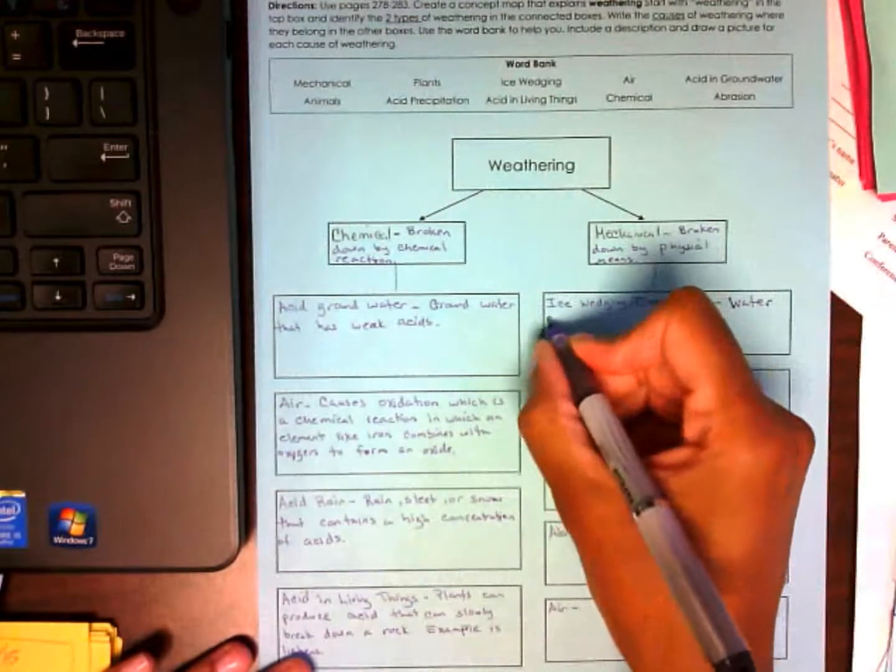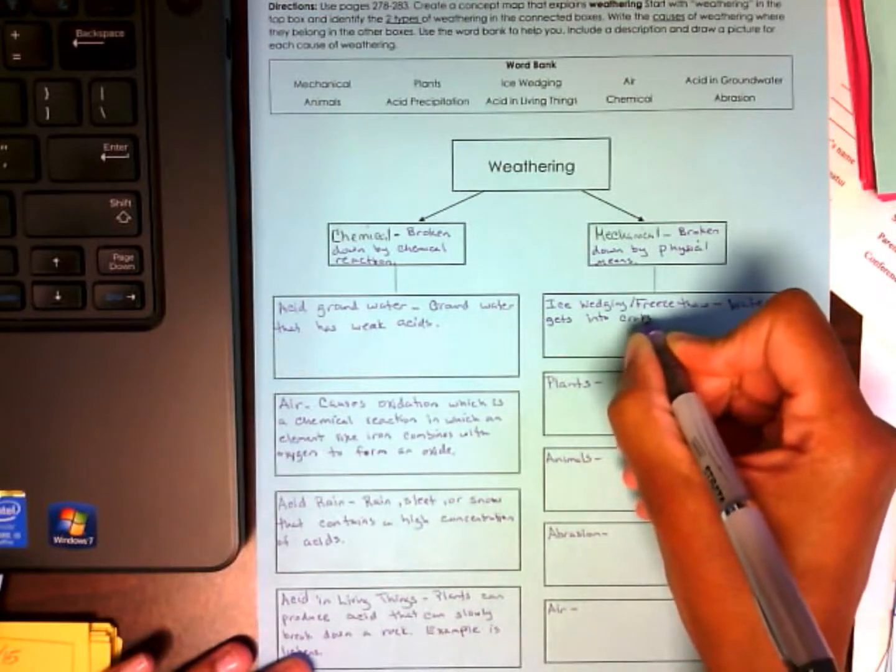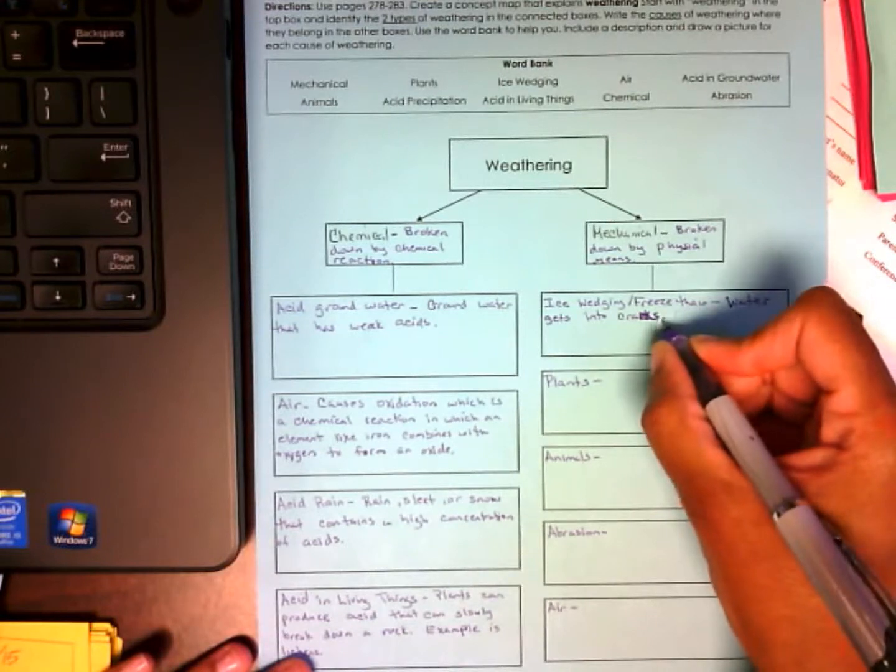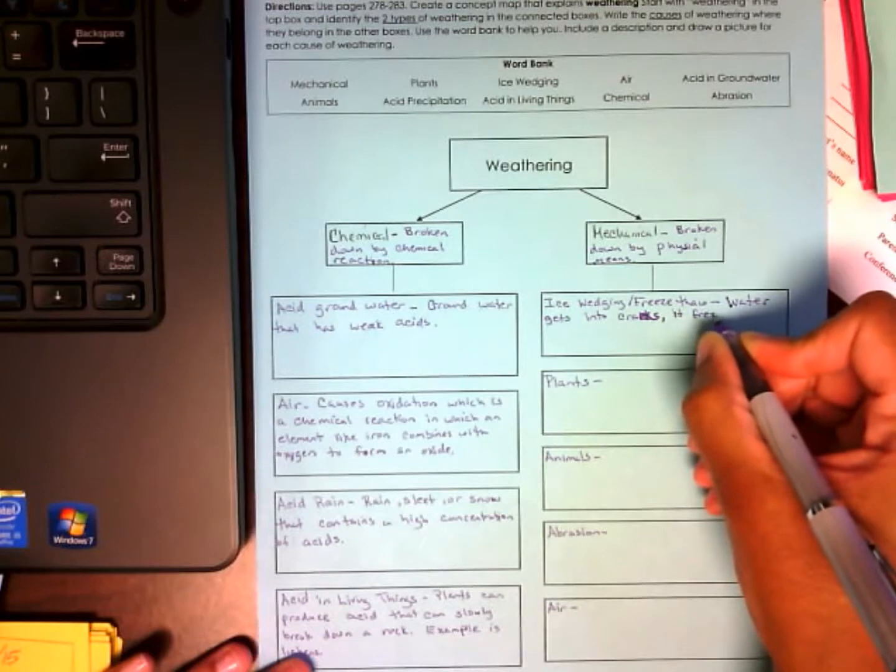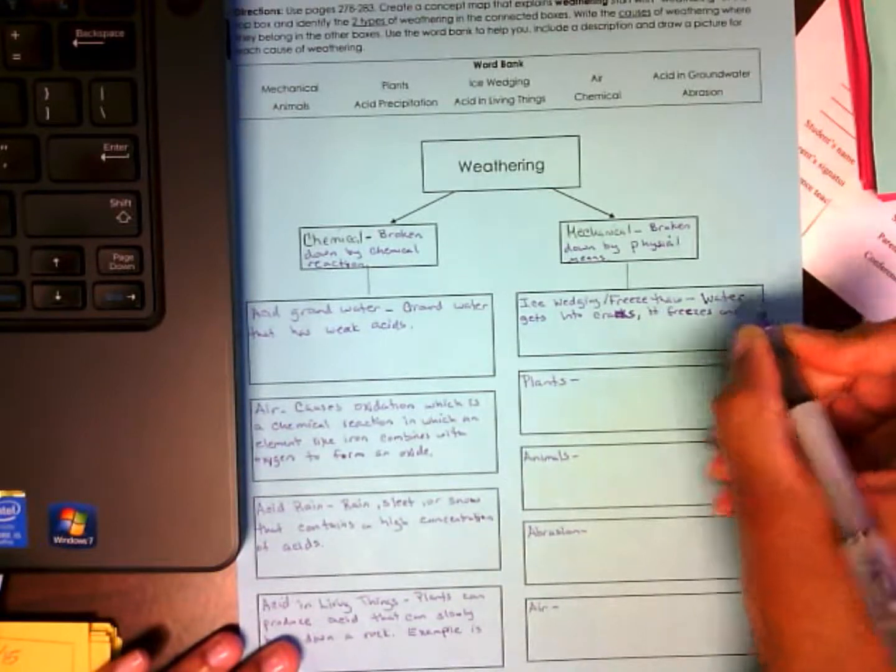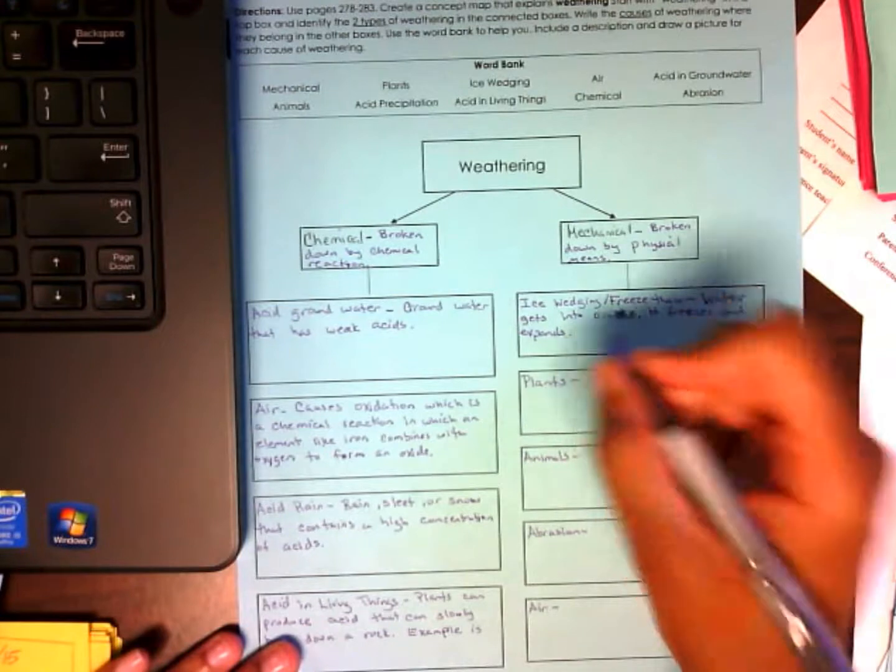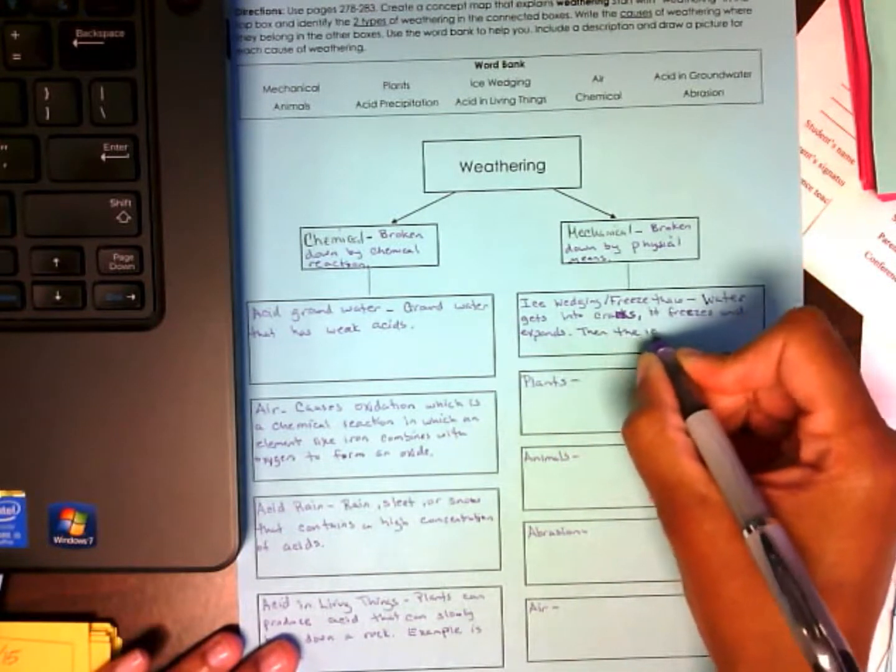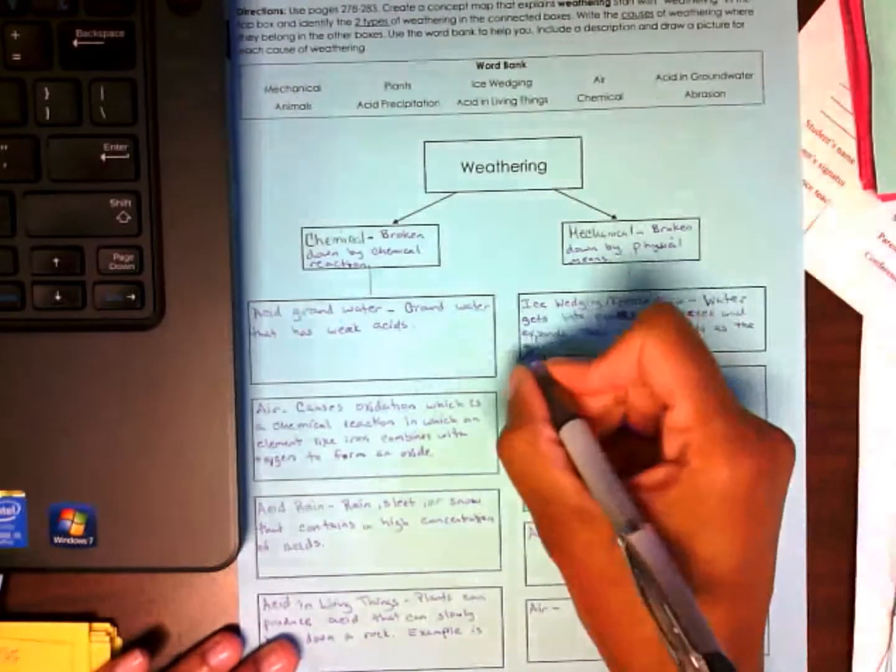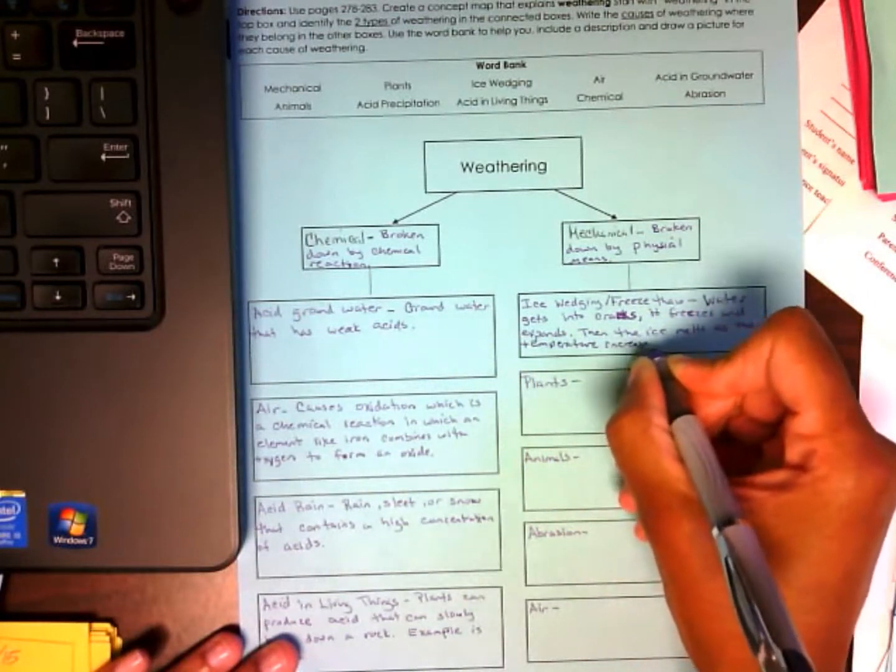So water gets into cracks. It freezes and expands. Then when it warms up, the ice melts again. So the ice melts as the temperature increases. And this happens over and over again.